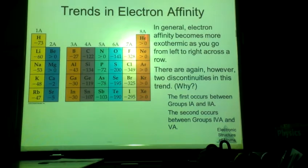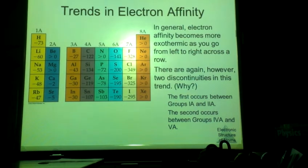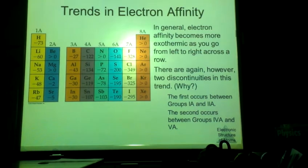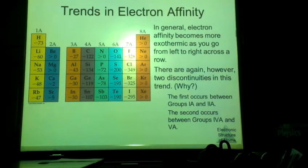Noble gases, we can see, all have a greater than zero electron affinity, so in this case they won't be releasing energy at all. They're going to have to absorb energy before they are ever able to add an electron, and that's because we know that the noble gases are already stable. So they're going to have to absorb a lot of energy if they're going to add on that electron because it's going to cause a lot of instability in the atom.